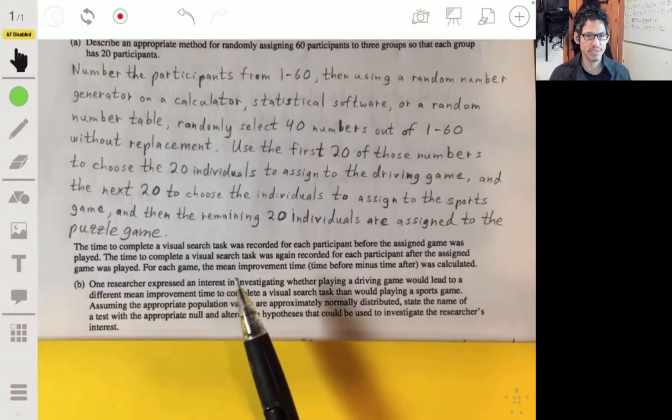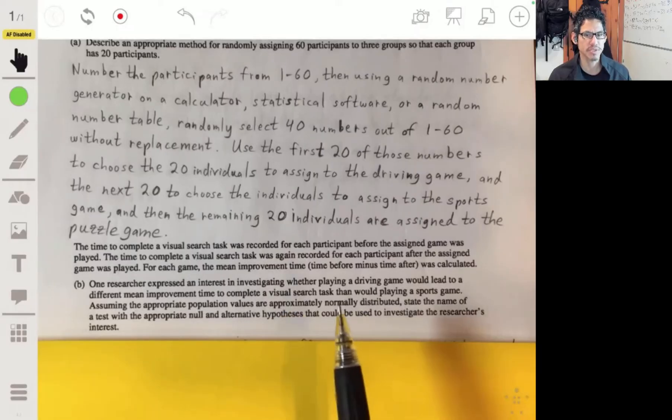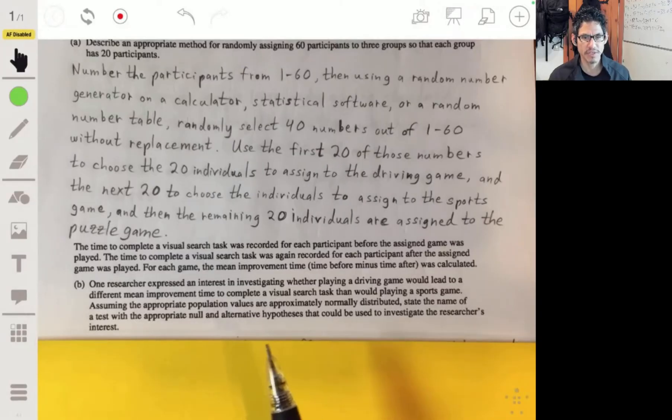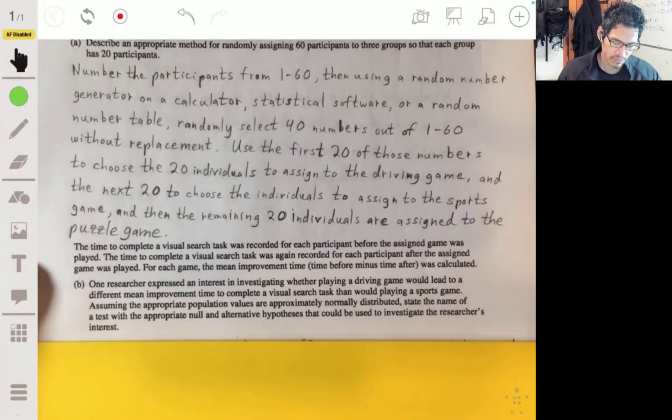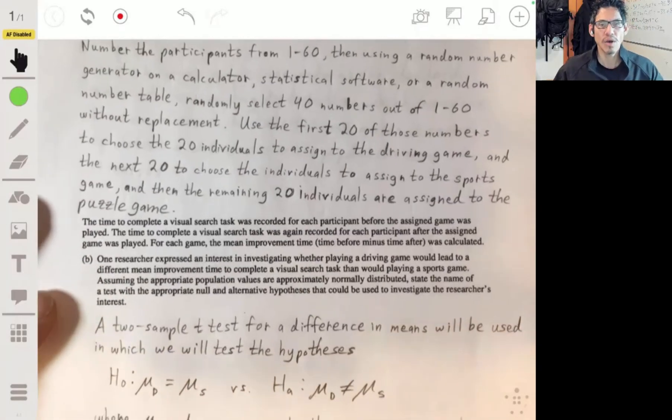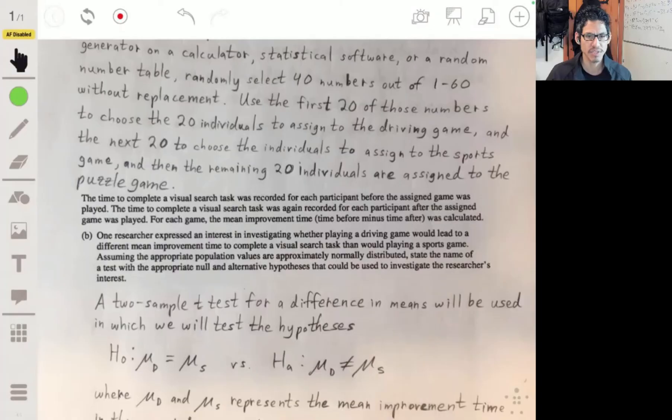The researcher expressed interest in investigating whether playing a driving game would lead to a different mean improvement time to complete the visual search task than versus playing a sports game. It says to assume that the population values are normally distributed and state to name the test with the appropriate null and alternative hypotheses that we would use for this investigation. We're going to be looking at a two-sample t-test for a difference in means. Because t-tests are for means, remember z-tests are for proportions.